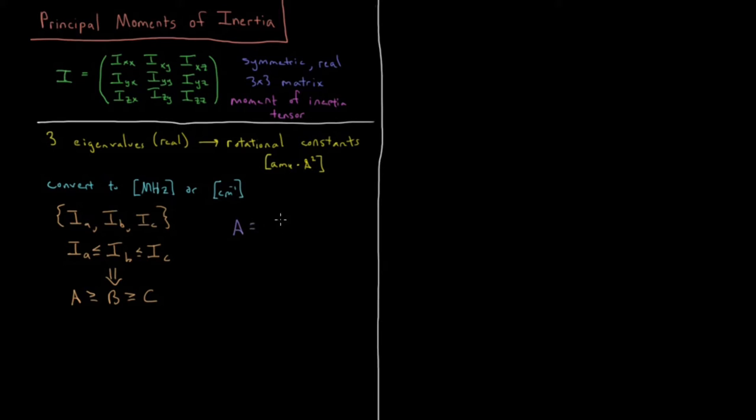We have A equals Planck's constant over 8π² times IA. B same thing for IB, h over 8π² IB. C, h over 8π² IC.